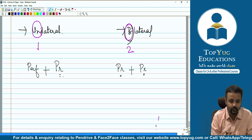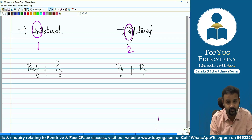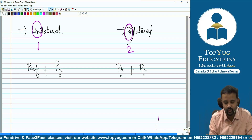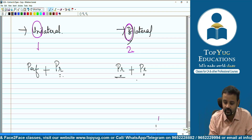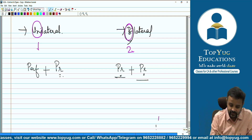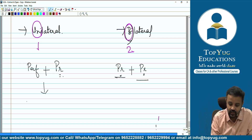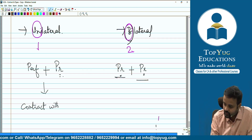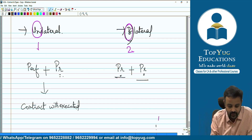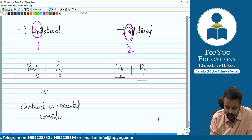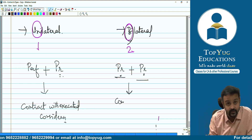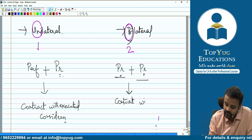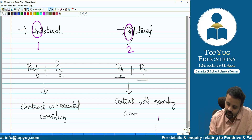When one party has performed and the other has only promised — that is performance plus promise — it is unilateral contract. This is also called contract with executed consideration. When both parties have promised but neither has performed — promise plus promise — it is a bilateral contract, also called contract with executory consideration.